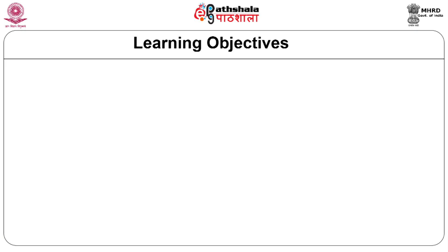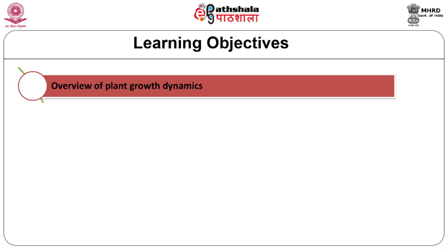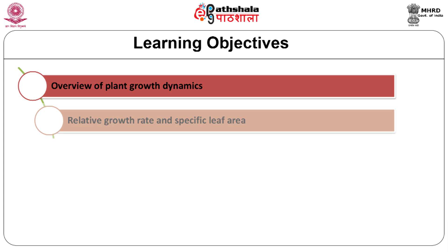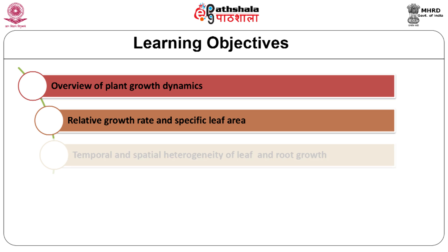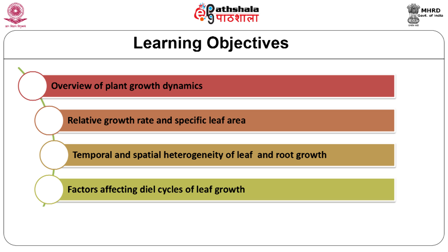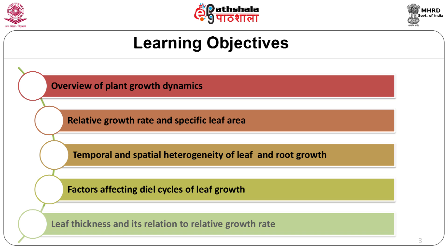The learning objectives of this module are: an overview of plant growth dynamics, relative growth rate and specific leaf area, spatial and temporal variation of leaf and root growth, factors affecting relative growth rate, leaf thickness and its relation to relative growth rate.